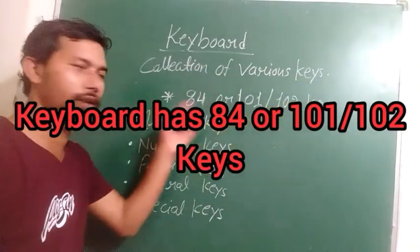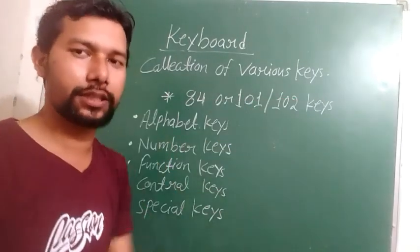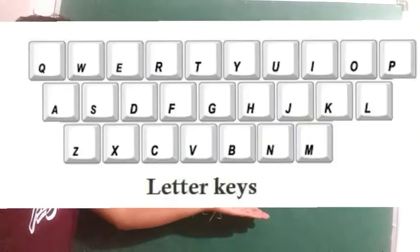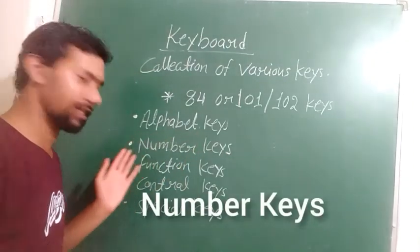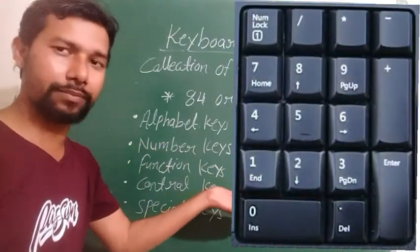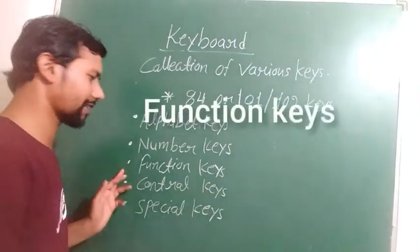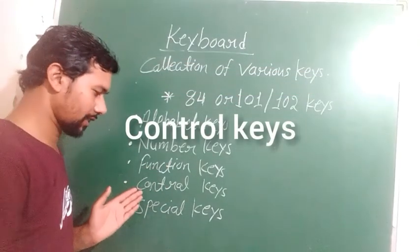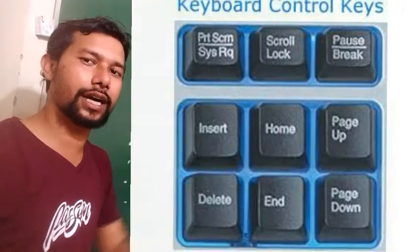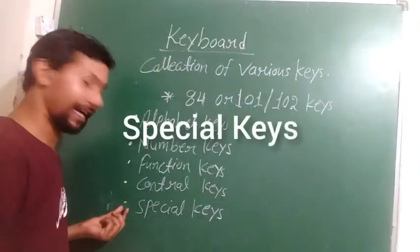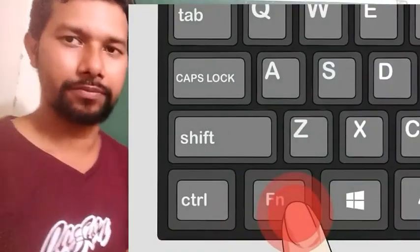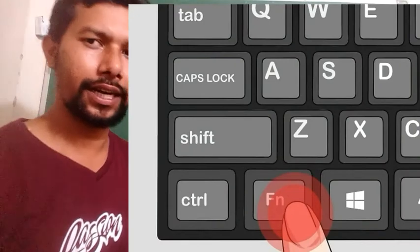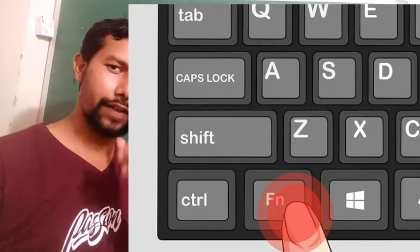Keyboard is a basic input device — it is a collection of various keys. A keyboard has 84, 101, or 102 keys. The first type is alphabet keys, used for typing. The second is number keys, from 0 to 9. Then function keys — there are 12, from F1 to F12 — each performing a special task. Control keys control your cursor or selection: up, down, left, and right. Last are special keys, like Control and Alt, which always work in combination.